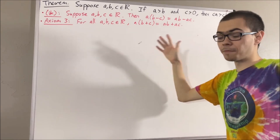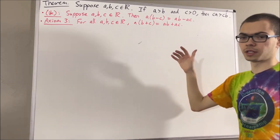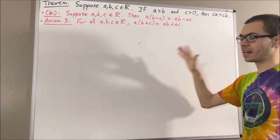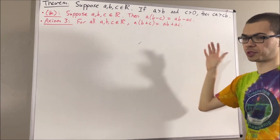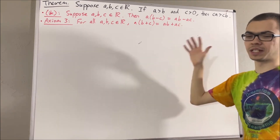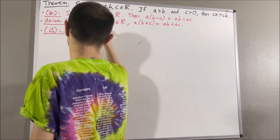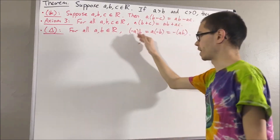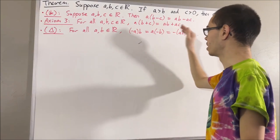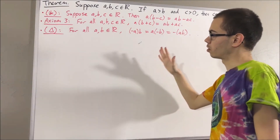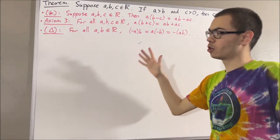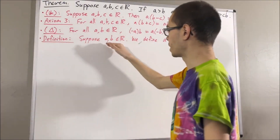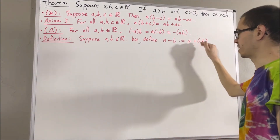Also, axiom 5 introduces the concept of the negative of a real number. Axiom 5 says: for every real number x, there exists a real number, which we call the negative of x, that has the property that x plus the negative of x is equal to 0. And a fact that we have proven associated with the negative of a real number is: for all real numbers A and B, the negative of A times B is equal to A times the negative of B, which is equal to the negative of AB. Also, using the concept of the negative of a real number, we define subtraction as follows. Suppose A and B are real numbers. We define A minus B to be A plus the negative of B.